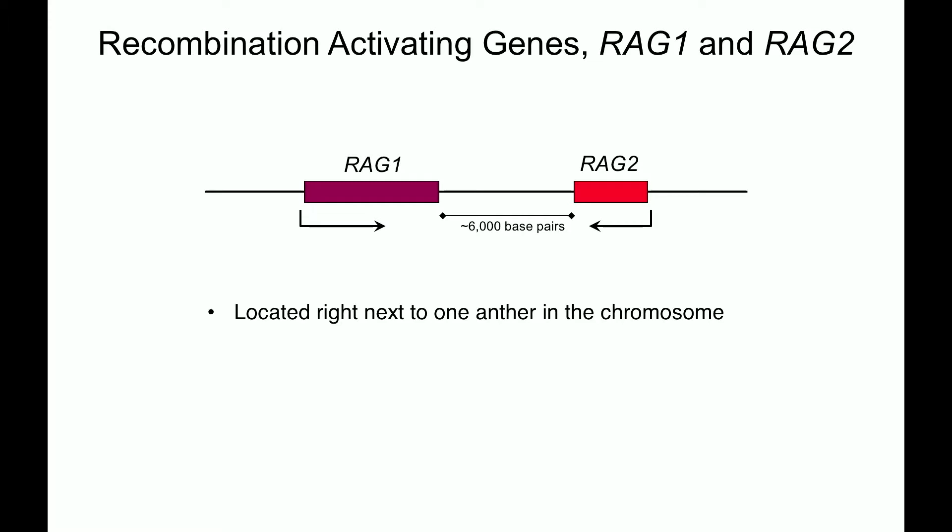It turns out that each of them is essential for VDJ recombination, and there are humans that have mutations in RAG1 or RAG2. Those folks have a very unfortunate phenotype. Without either one of these genes, you have no VDJ recombination, no B cells, no antibody, and no adaptive immune system — meaning you are severely immunodeficient. So this is a really important reaction, and these are really important genes.